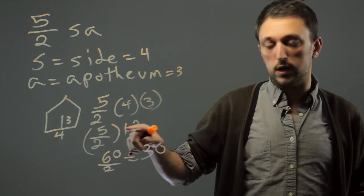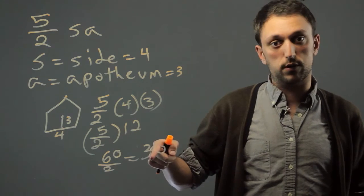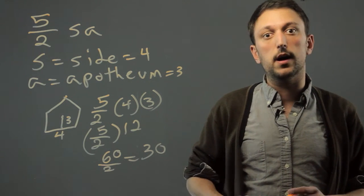You could also do 12 divided by 2, which is 6, and then multiply by 5, which is 30. So that is how you find the surface area of a pentagon.